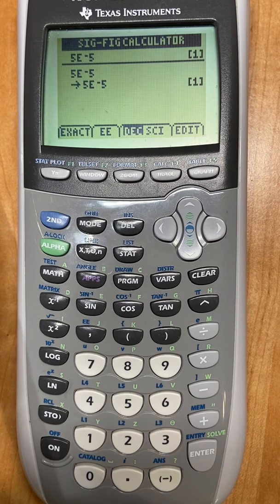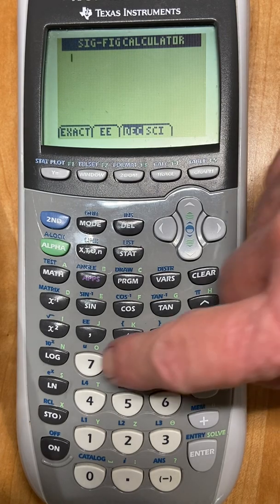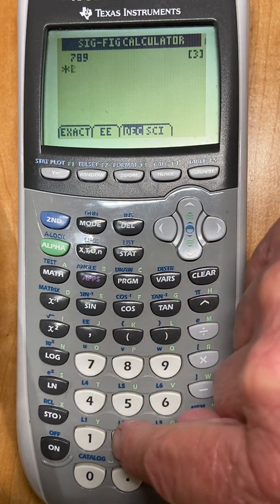Again, when it does this, you see that it tends to go in scientific notation. What about multiplying? You know, sometimes I'm going to ask you to multiply. So what if I have 789 times 2?